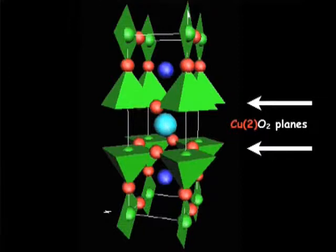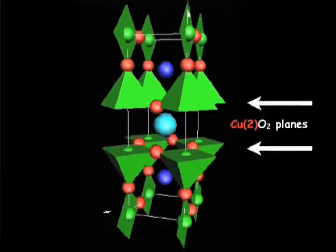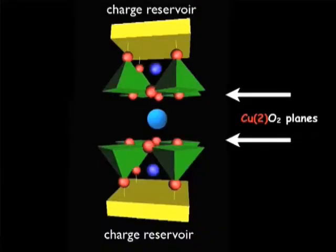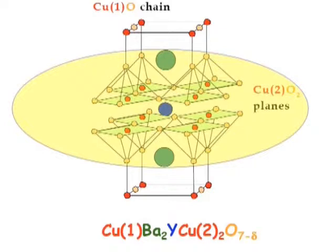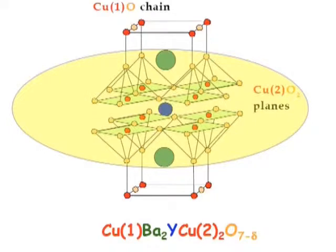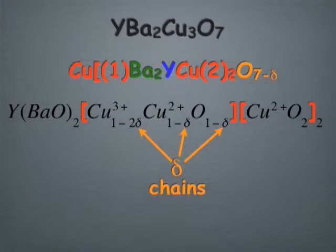the oxygen content in the superconducting CO2 planes remains constant. All the changes in the oxygen content occur only in the charge-reservoir block. This is rather important because now we can keep the coordination sphere around the copper atoms in CO2 planes constant, and it seems to be important for the localization of charge in these planes.